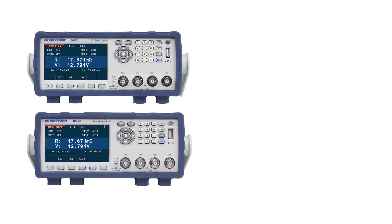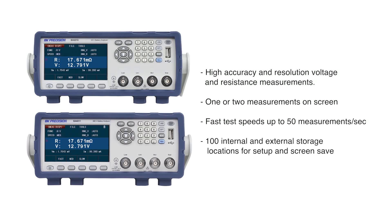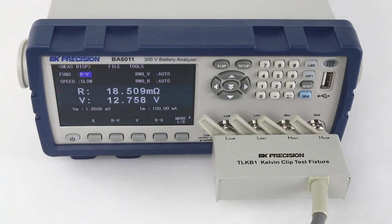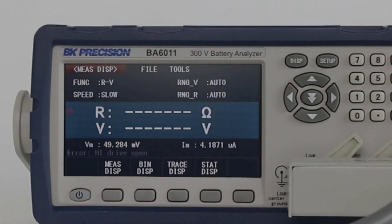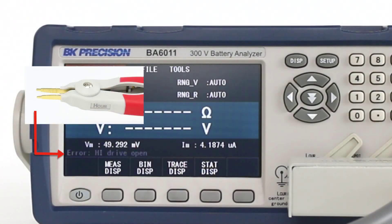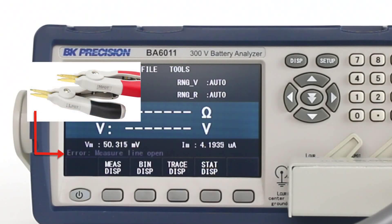All other features are identical and include high accuracy and resolution voltage and resistance measurements, one or two measurements on screen, fast test speeds up to 50 measurements per second, and 100 internal and external storage locations for setup and screen save. The four terminals on the front of the unit are used together with the Kelvin Clip test fixture, which helps minimize the influence of test lead resistance while improving measurement accuracy. The on-screen probe monitoring system detects test probe contact failure and damaged leads to ensure reliable connection and measurements.